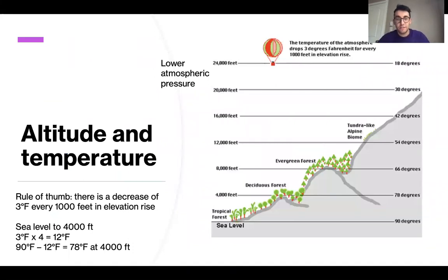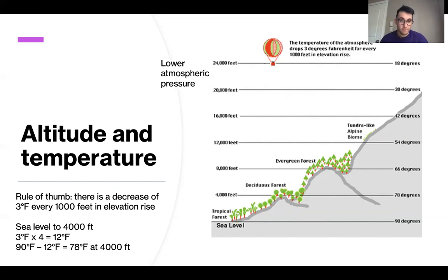The next concept is altitude and temperature. Because of the lower atmospheric pressure higher up, it actually gets colder. A rule of thumb is there's a three degree Fahrenheit decrease for every 1,000 feet of elevation that you rise. You can think of sea level as the warmest point, and as you gain altitude, it gets colder and colder — generally about three degrees every 1,000 feet.